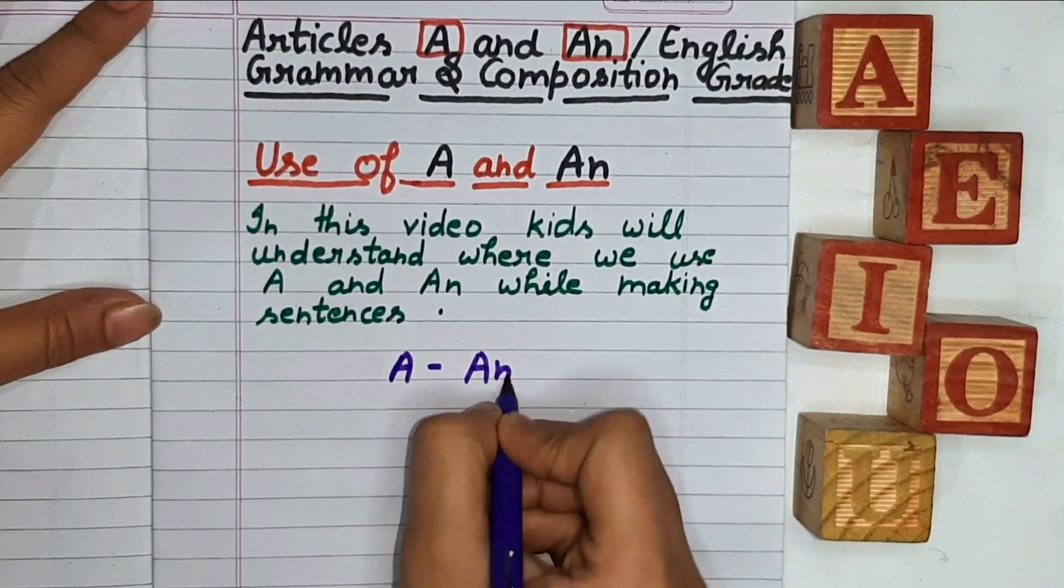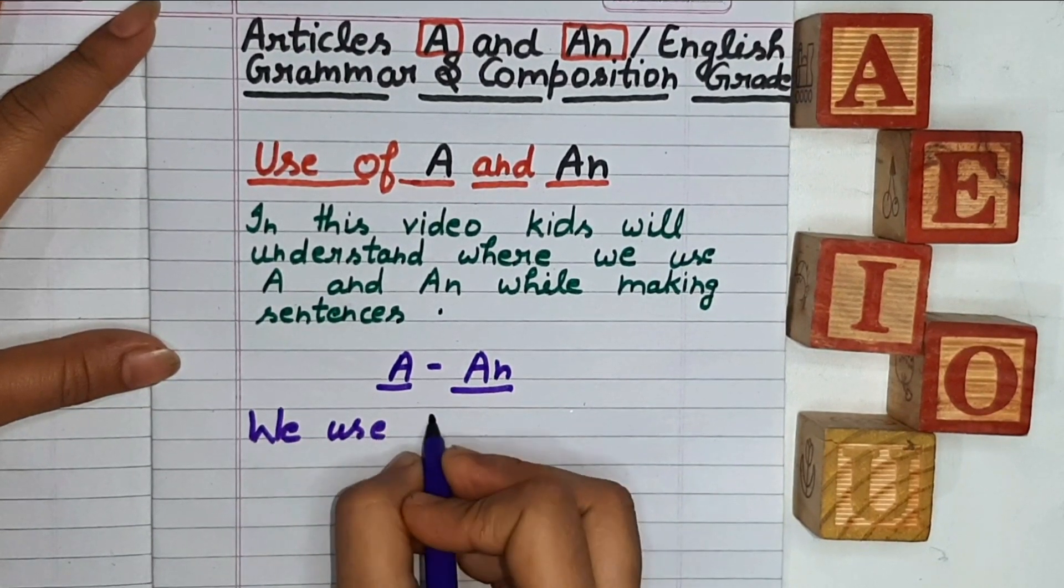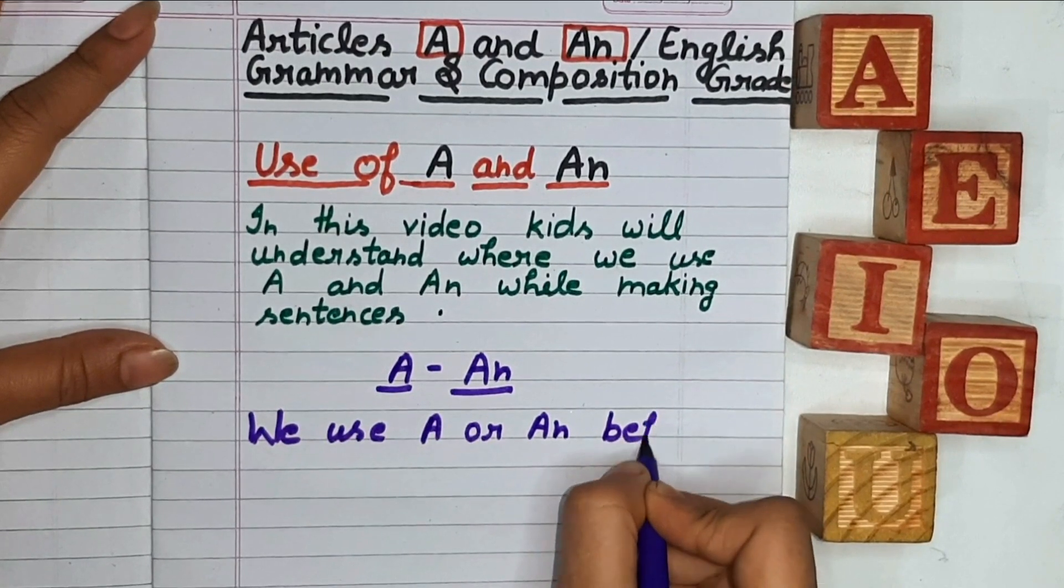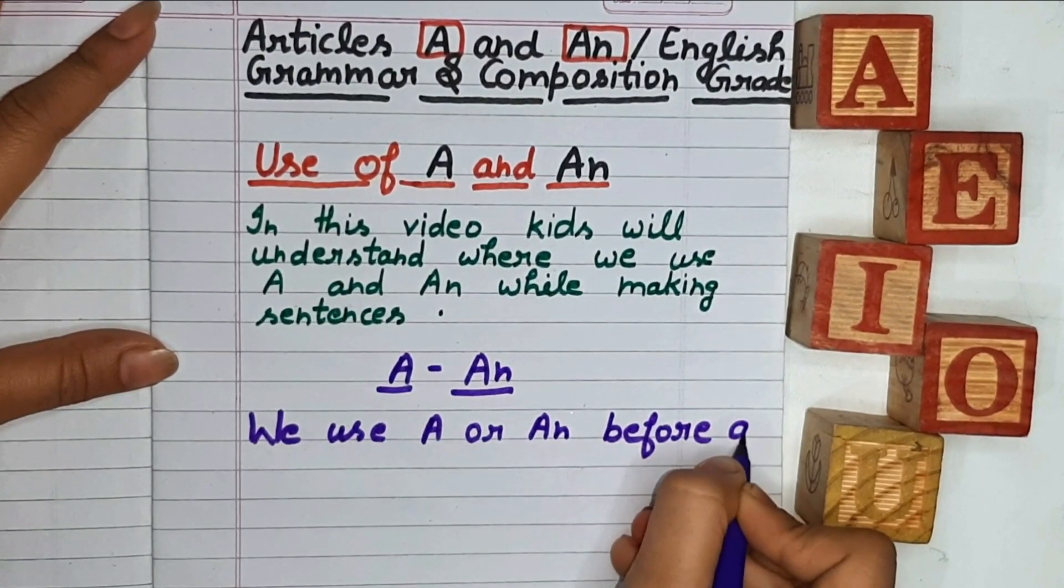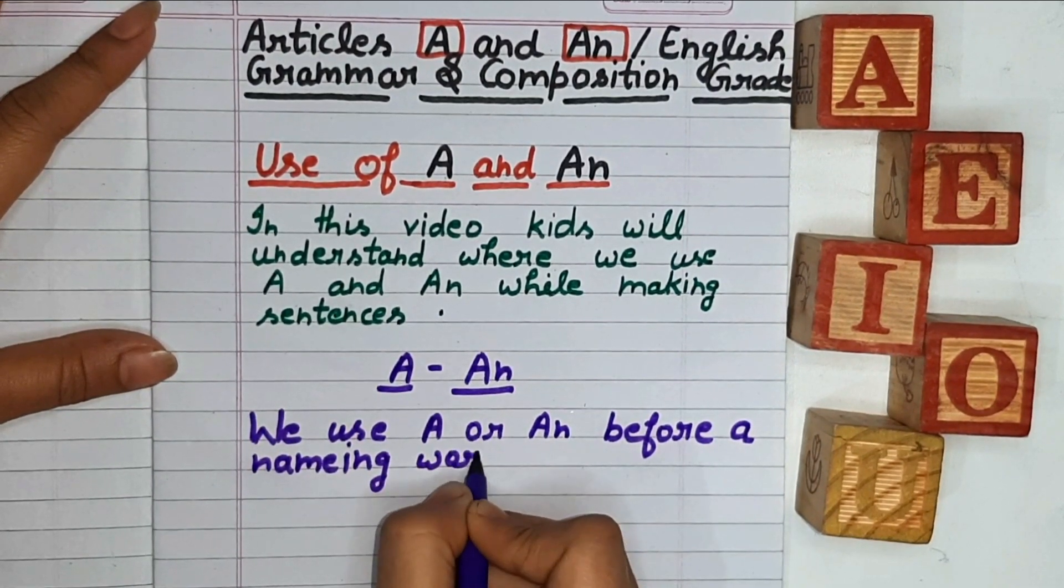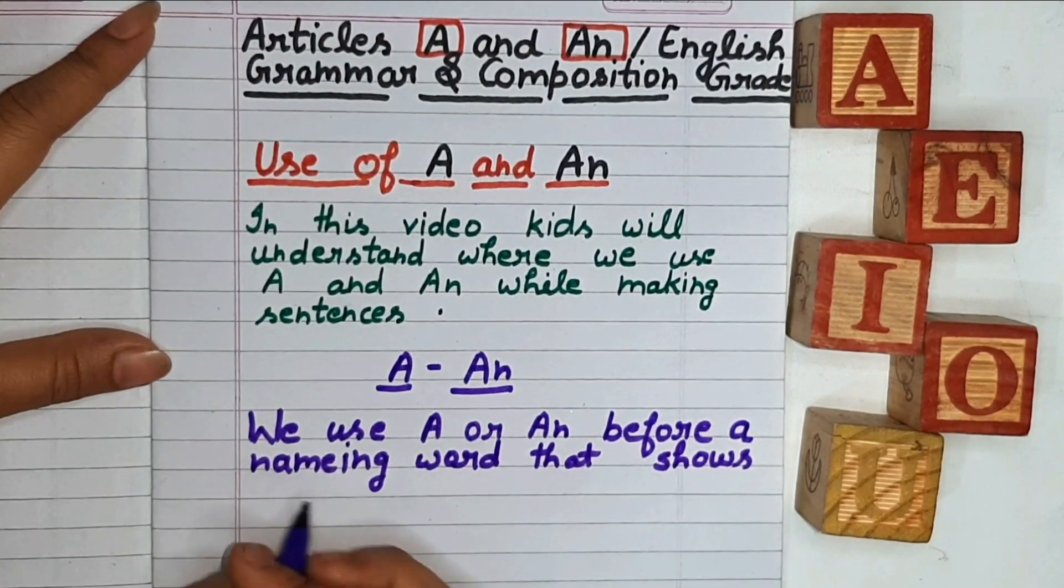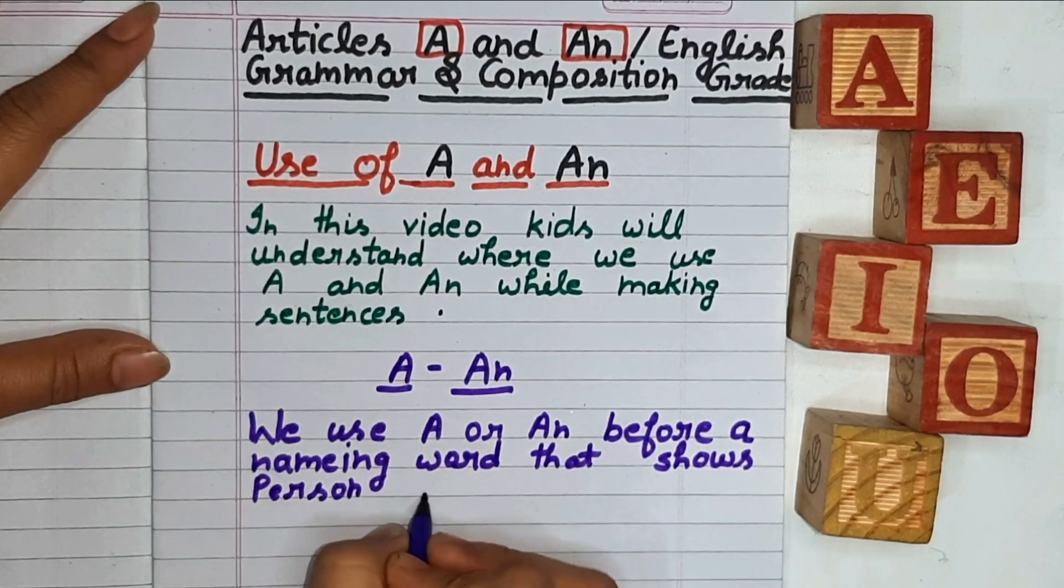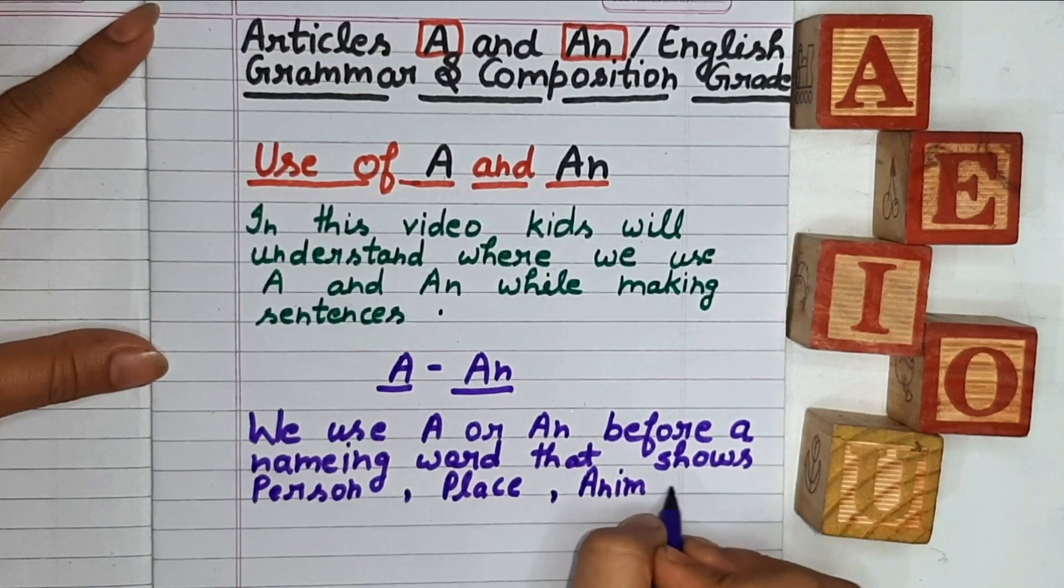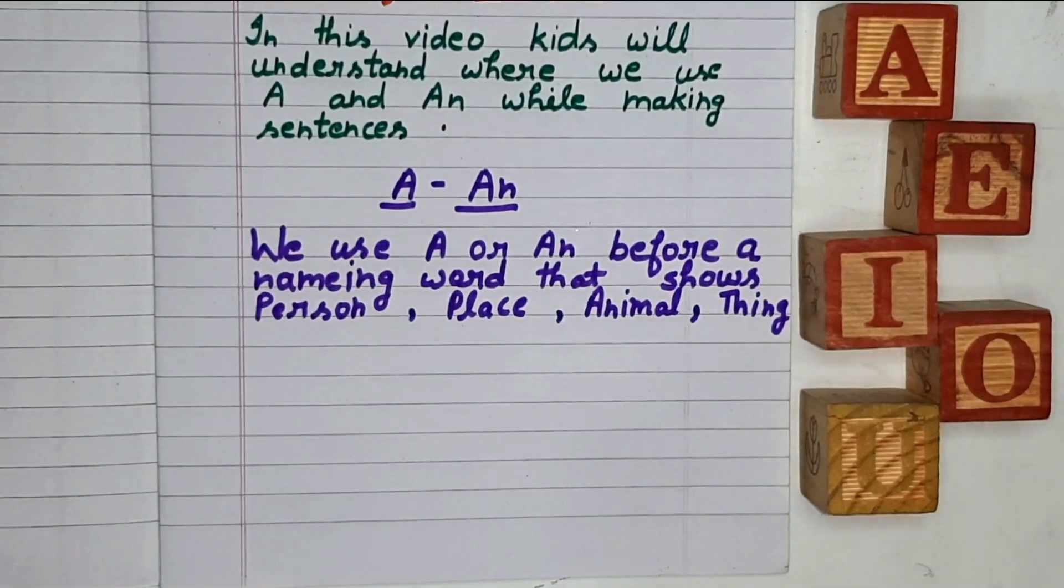A and An - we use A or An before naming words. Naming words show person, place, animal, or thing. For example: